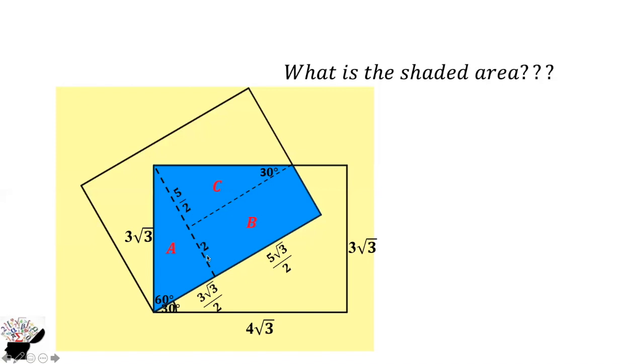We have two triangles, A and C, and we have one rectangle, B. So we can find the area now.